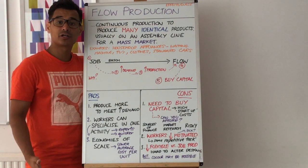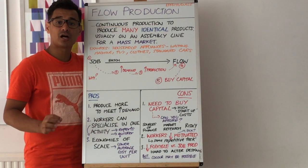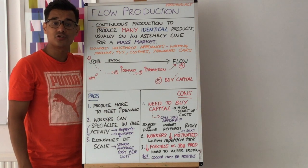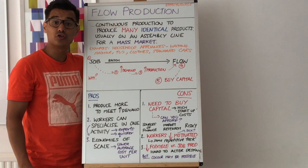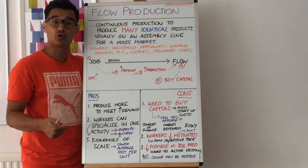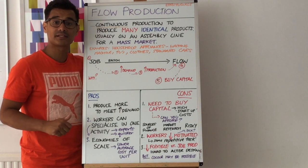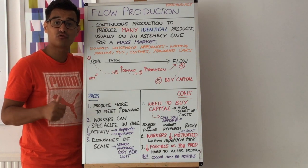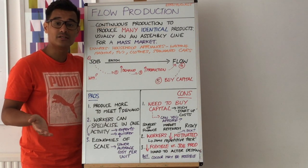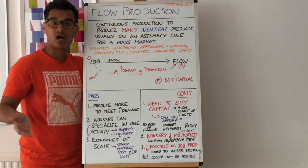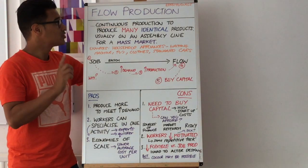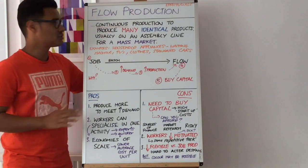Let's have a session on flow production. Flow production comes out of the effectiveness side of operations — you're thinking about how you can reduce your costs to therefore reduce your prices, how you can improve your quality to meet your customers' expectations, or how you can improve your flexibility so you can meet your consumers' demands as their fashions and tastes change. So flow production is about the effectiveness side.